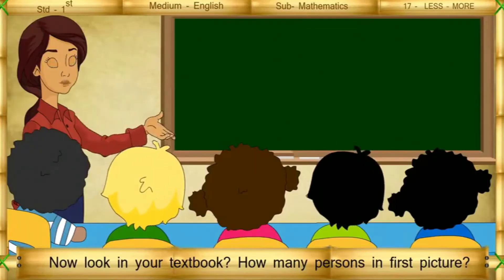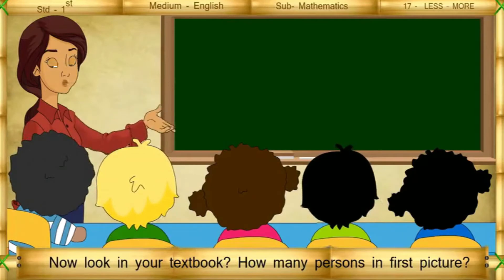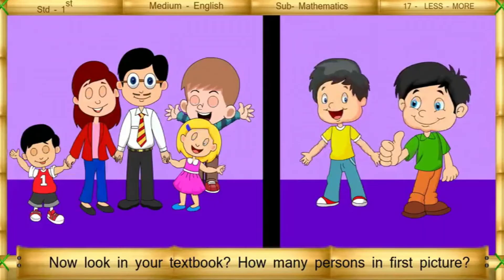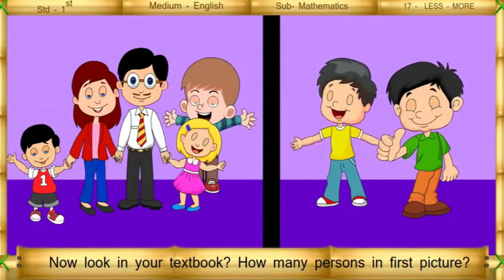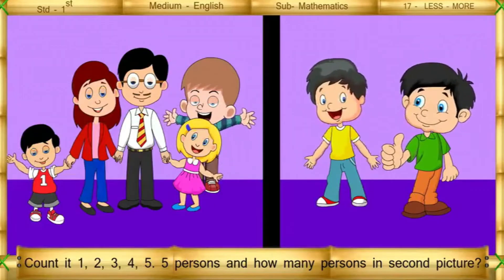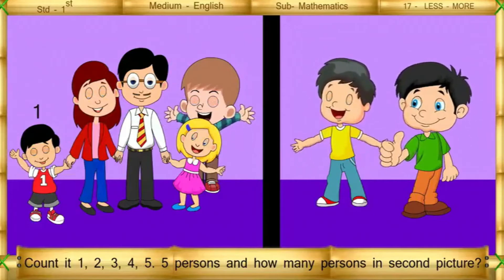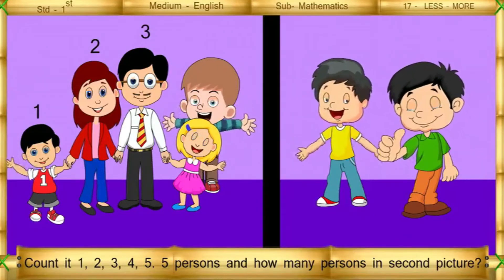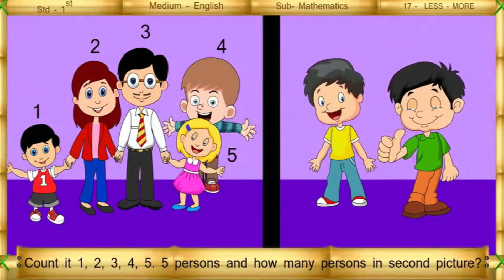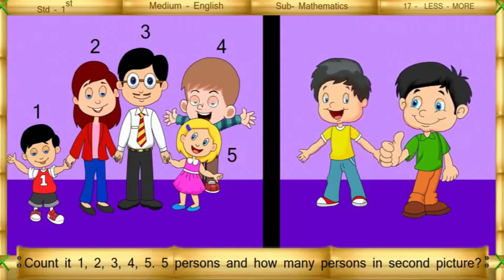Now, look in your textbook. How many persons are in the first picture? Count it. 1, 2, 3, 4, 5 — 5 persons.